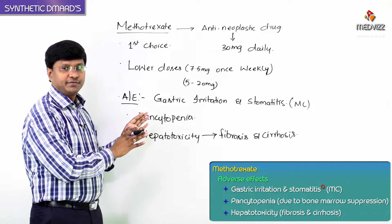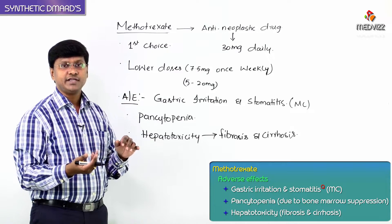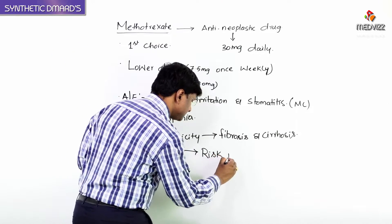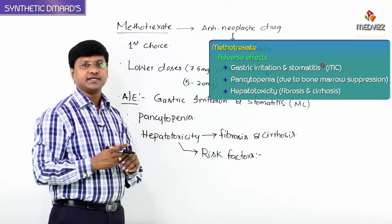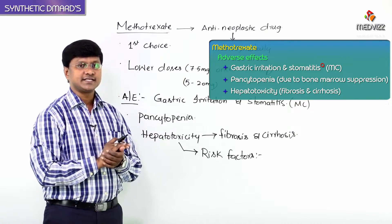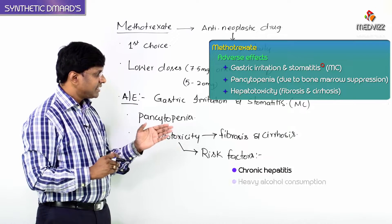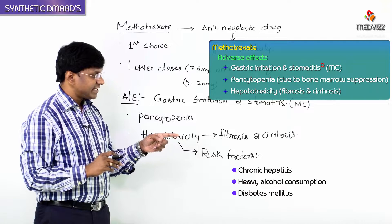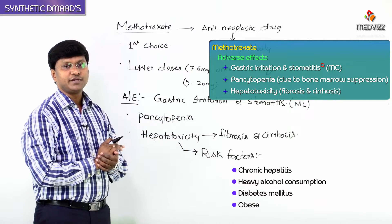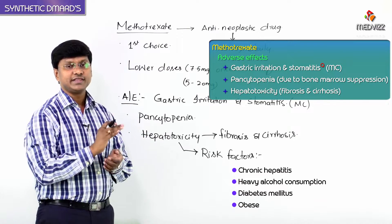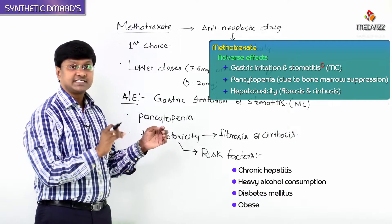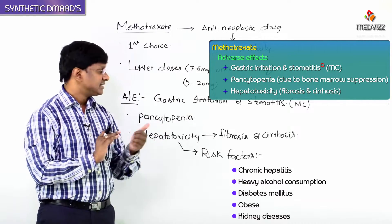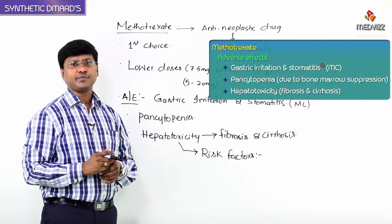What are the risk factors for developing fibrosis and cirrhosis with methotrexate? The risk factors are: patients with chronic hepatitis, patients with heavy alcohol consumption, patients with diabetes mellitus, patients who are extremely obese, and patients with kidney disease — all of these individuals have a high chance of developing fibrosis and cirrhosis when on methotrexate.